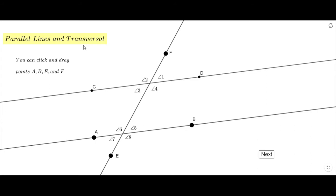You notice on this app I have line AB and line CD. These two lines are parallel lines and line FE is a transversal line. They form eight angles and I'm going to talk about some angle pairs.